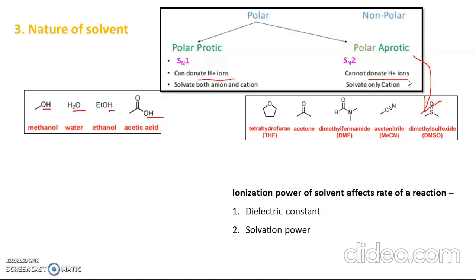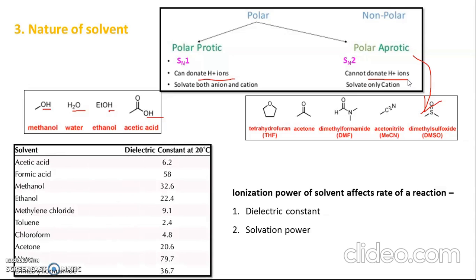Ionization power is very important as it affects the rate of a reaction. Ionization power — meaning how fast a solvent can promote ionization of a compound — is directly related to the dielectric constant and solvation power of the solvent. Some dielectric constant values are given in a table for reference. Solvation power refers to how easily the solvent can solvate anions or cations. Polar solvents can solvate both anions and cations, but non-polar solvents can solvate only cations.